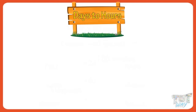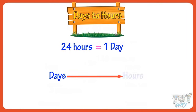Days to hours. Kids, there are 24 hours in a day. So to convert days to hours, we need to multiply days with 24.